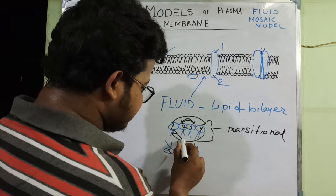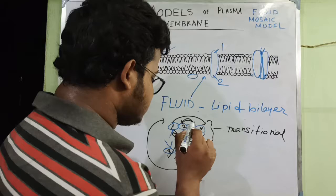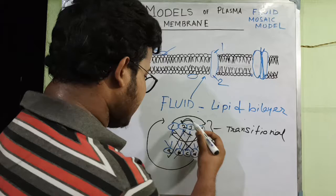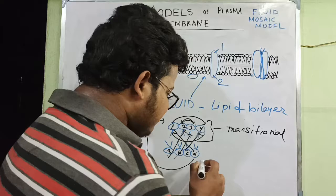There is also another type of movement. If position 1 can exchange with position D across layers, or A can exchange with 2, B with 3, and C with 4 — this type of movement occurs between the two layers and is known as flip-flop movement.